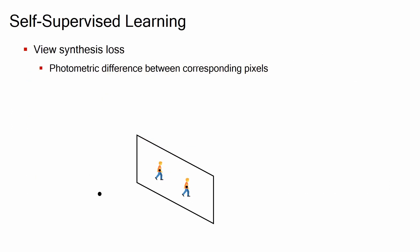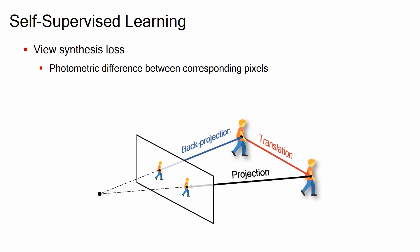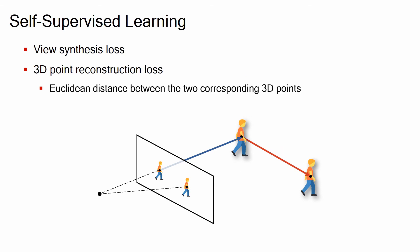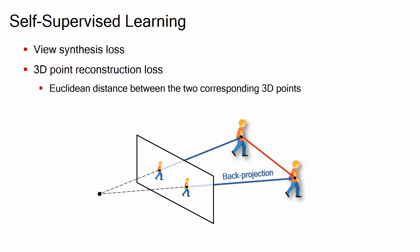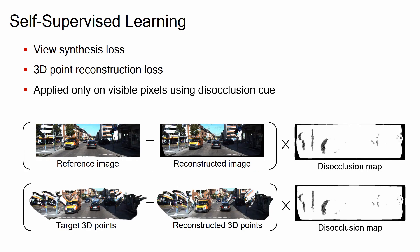We adopt self-supervised learning and introduce two novel losses. First, we propose a view synthesis loss that penalizes the photometric difference between corresponding pixels, which guides the network to estimate a combination of depth and scene flow that matches the corresponding pixels. Second, we propose a 3D point view reconstruction loss that penalizes the Euclidean distance between two corresponding points. We only apply these losses on visible pixels where the correspondence should hold, and we obtain the occlusion mask by using backward scene flow.